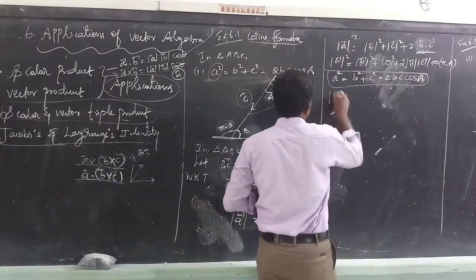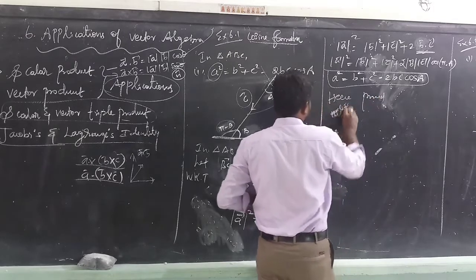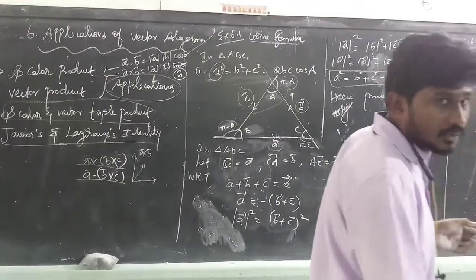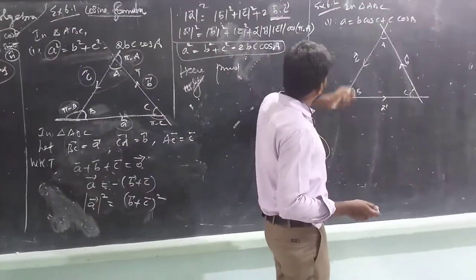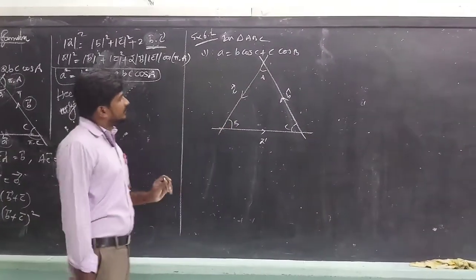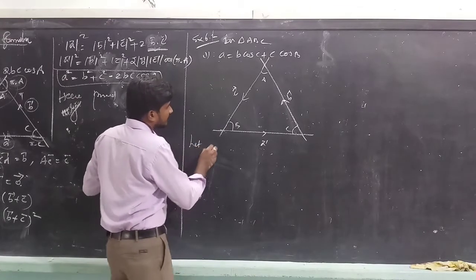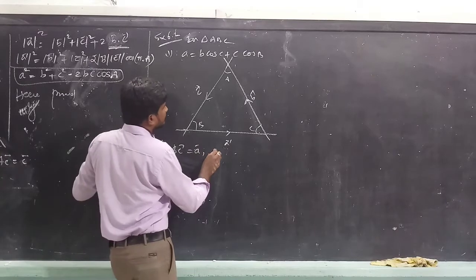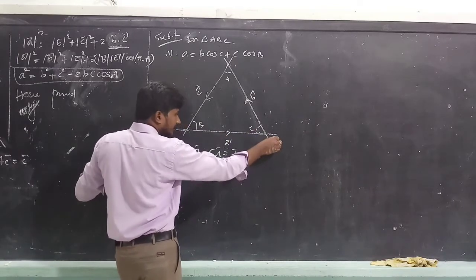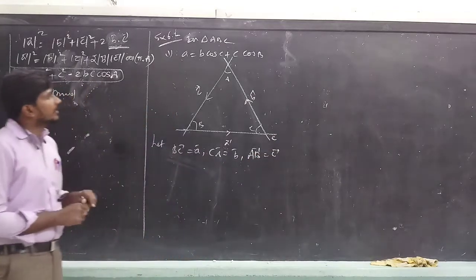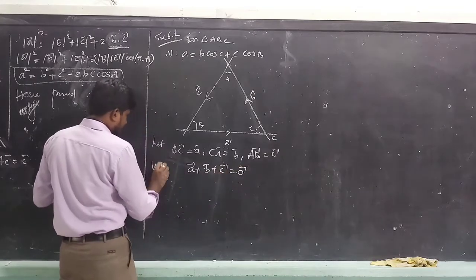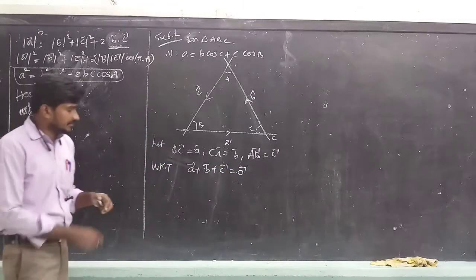Hence, proof. Similarly, this is the method — the method is proved. Next problem: Example 6.2. In triangle ABC, a equals b·cosC plus c·cosB. Let's prove it. By the triangle law, a-vector plus b-vector plus c-vector equals zero. We know that in a triangle.